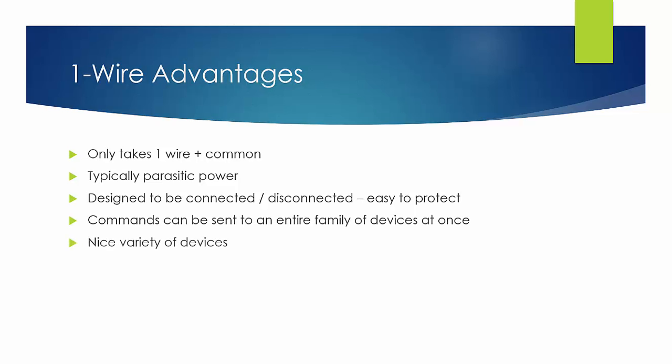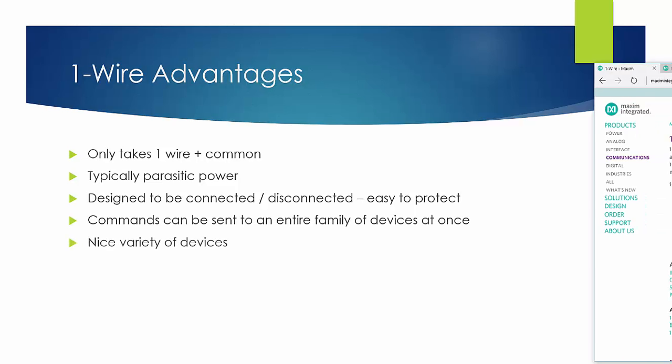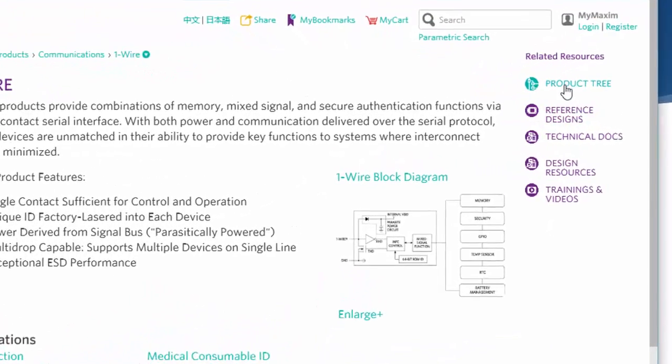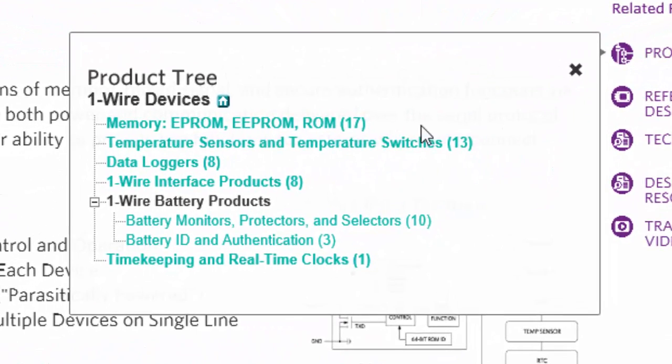There's a nice variety of devices. If you look at the MACSIM website, for example, you can see in their one-wire page they have a product tree. You can see there's a number of memory devices, temperature sensors, data loggers. There's some one-wire interface products if you don't want to use a one-wire port on your device, some battery products such as battery monitors, battery IDs, and then timekeeping and real-time clocks. So a nice variety of devices. They're all compatible on the same bus.